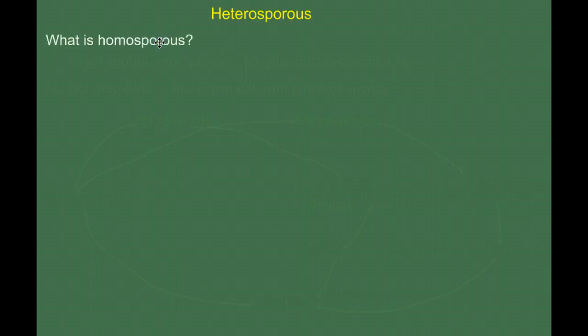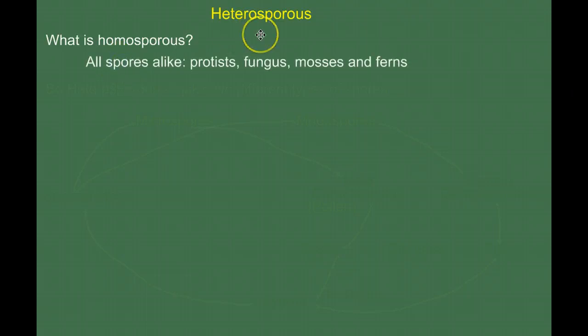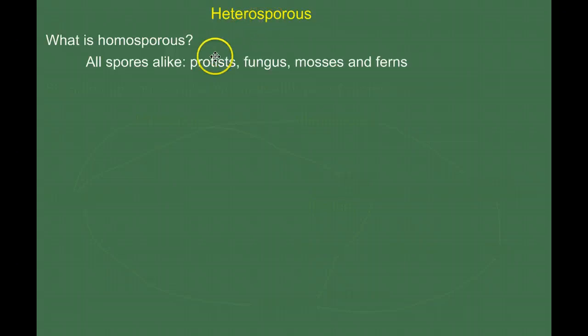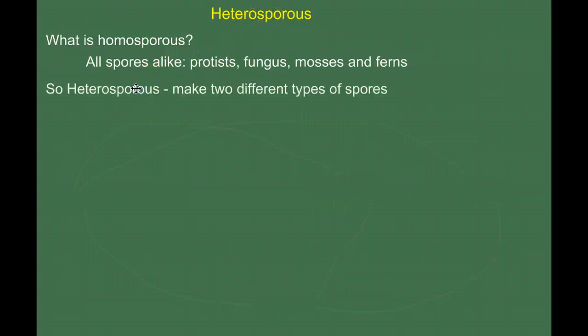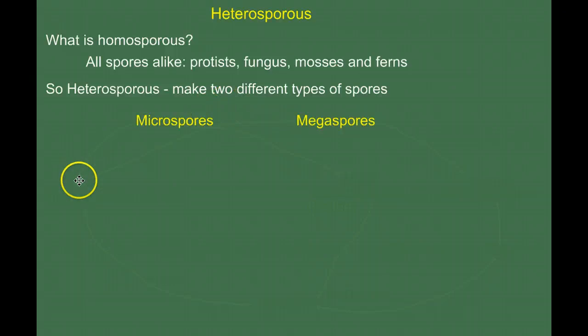Now let's talk about what we mean by heterosporous. Seed plants are heterosporous. Homo means the same, hetero means different. In homosporous organisms — like protists, fungi, mosses, or ferns — all the spores are alike. But in heterosporous organisms, we have two types of spores: microspores and megaspores. Remembering the alternation of generations life cycle — what makes spores? Spores come from sporophytes.